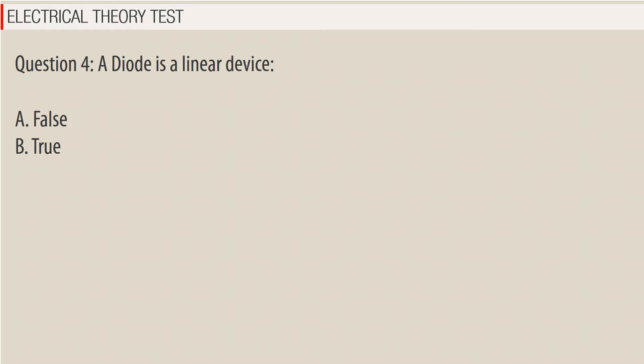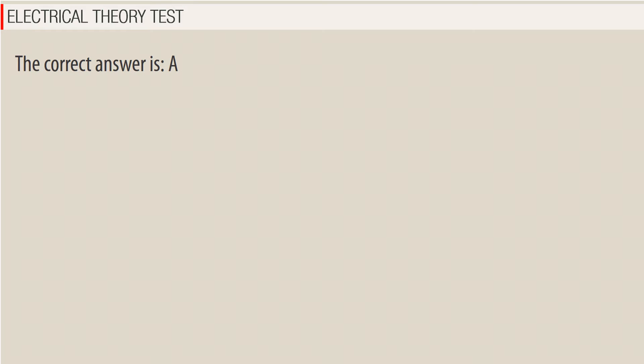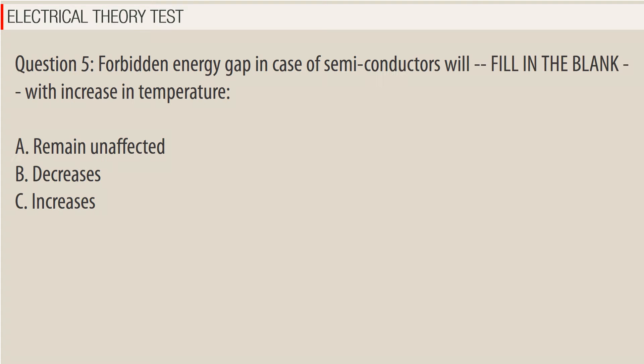Question 4. A diode is a linear device. A. False. The correct answer is A — False. Question 5.